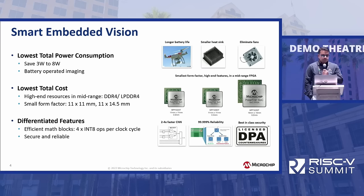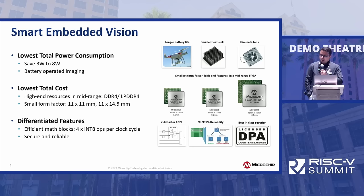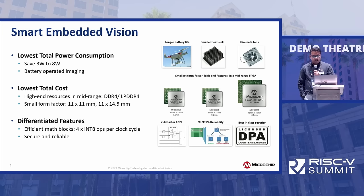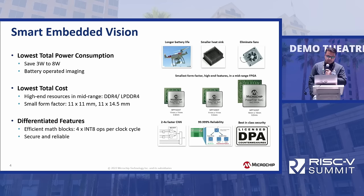Coming to our FPGA fabric — we are talking about AI-ML applications, and I'll show you some demos we have. Our FPGA fabric is architected to have a four-input LUT. In most AI-ML applications, you'd be doing a lot of matrix multiplications, and our fabric is ideally suited to design the most efficient CNNs. That's what makes our FPGA design much more unique.